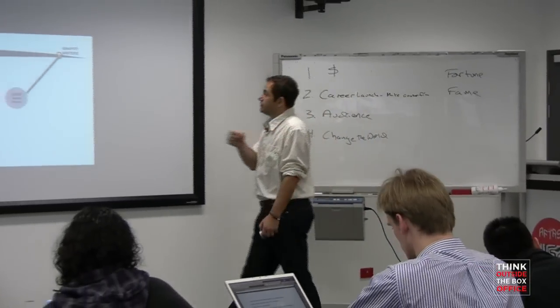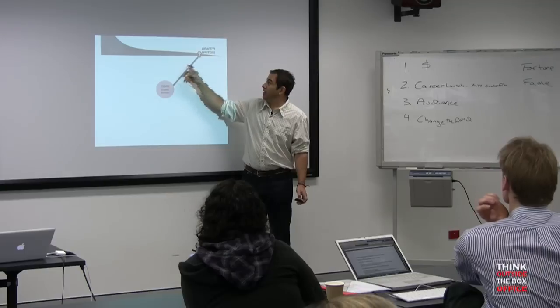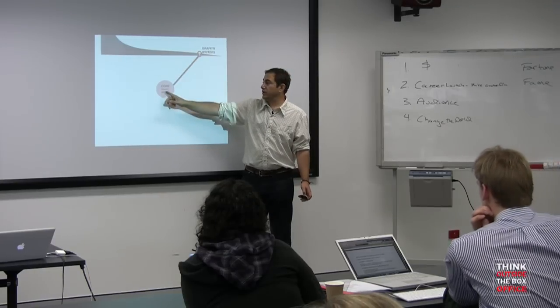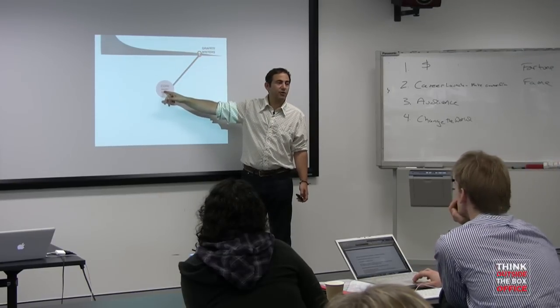So for instance, you have graffiti writers. Actually what the core is, and this is I know hilariously stupid and easy, the core of graffiti writers are the graffiti writers in the film Vomit.